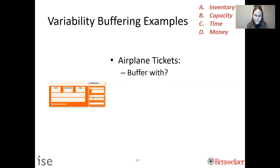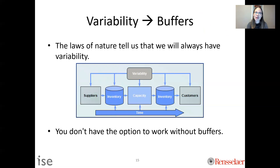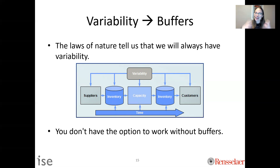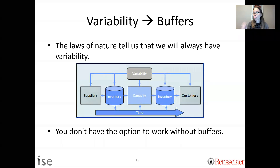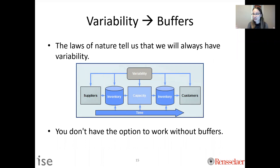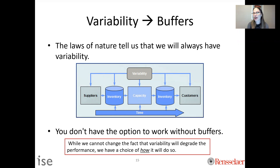We will always have variability, so we will always need to buffer against it. We can try to reduce variability — that's the whole idea of Six Sigma. If I reduce variability, I can have less capacity, which is more efficient, and less inventory. It's really powerful to reduce variability. That being said, you will always have some variability, and therefore you'll always have to work with buffers. However, you can be smart about how you do that.